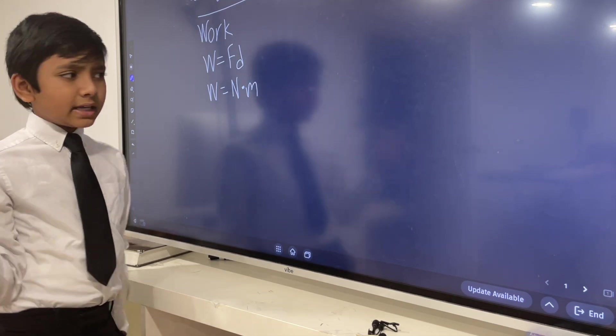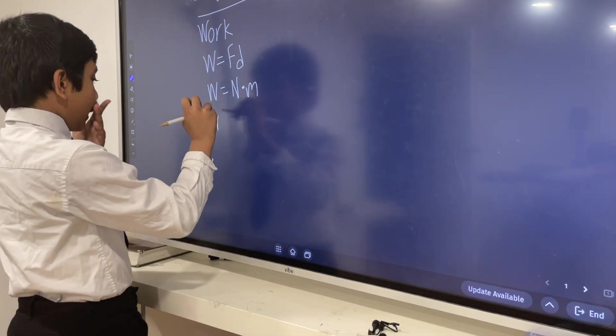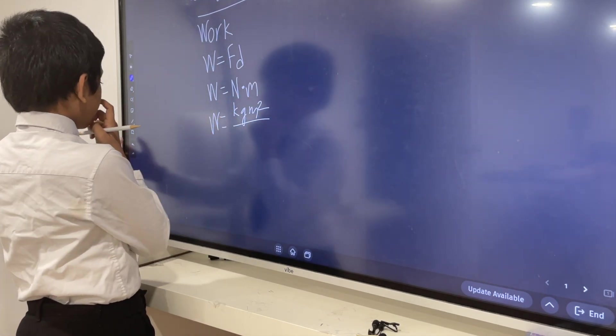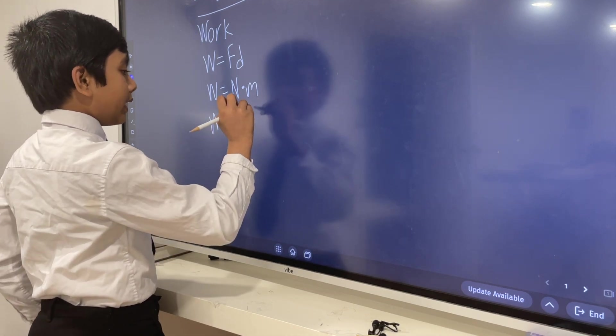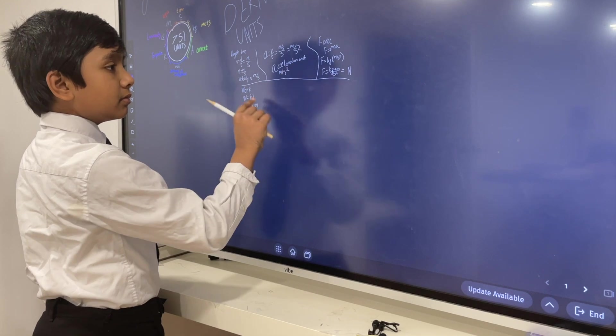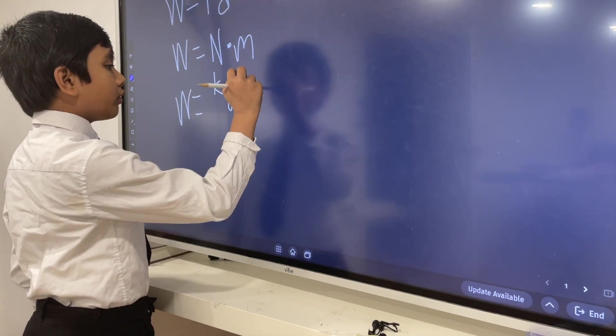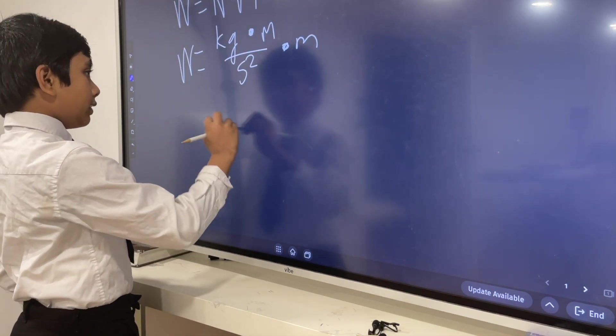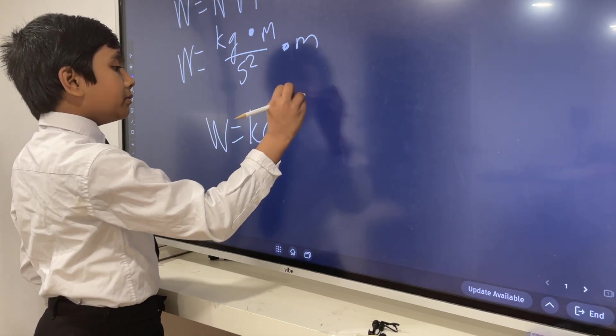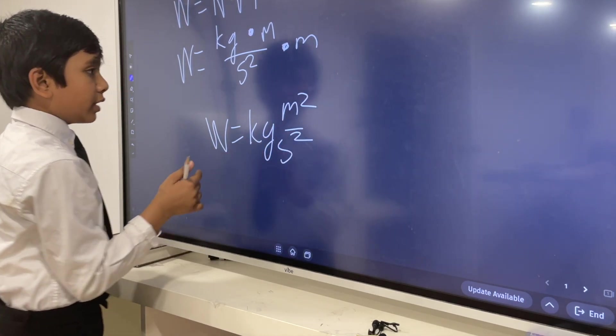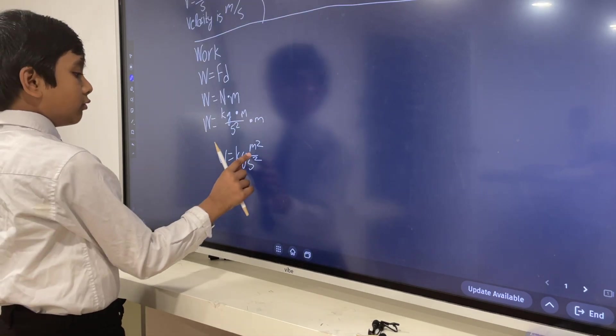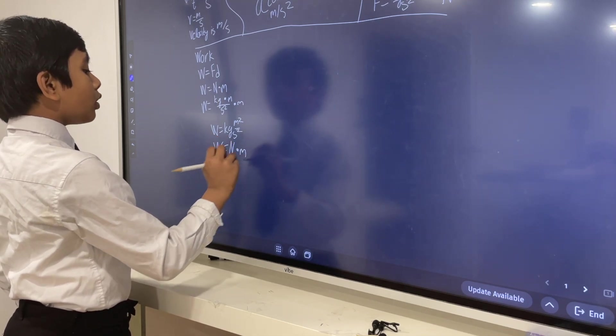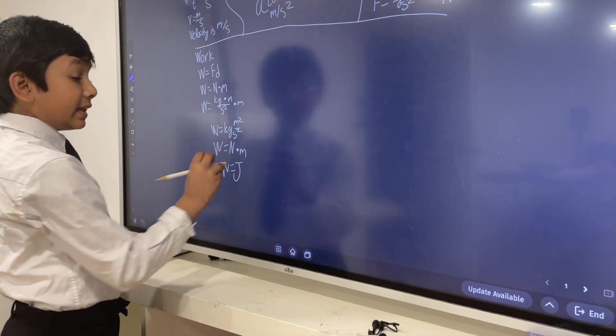But wait! What if we wanted to break this down even more? Well, we realized that Newtons are kilogram meter over second squared. So multiplying that by meters would give you essentially kilogram meter squared over second squared. So work can be expressed like this, it can be expressed like this, or it can most commonly be expressed like this, the joule.